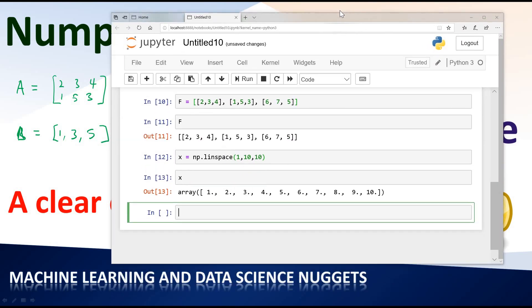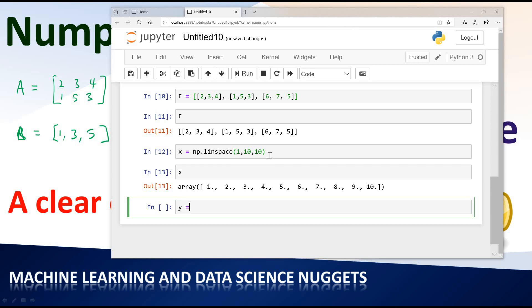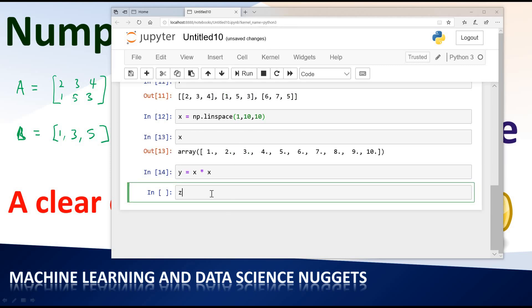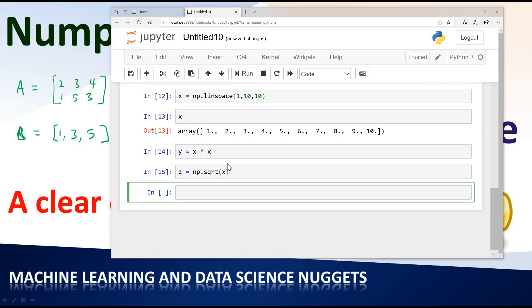And then we want y equals x squared. So I'm going to say x squared which is x times x. I like running every time I type because you can write everything in one cell, but I want to make sure that if I have errors, I know where the error is coming from. And np.sqrt. I think sqrt is for square roots. Let me see. I don't really know if that is correct, but let's try. Okay, sqrt is for square roots.